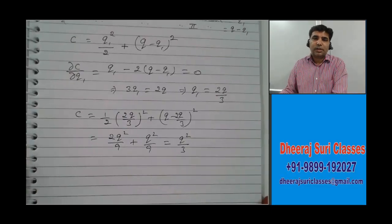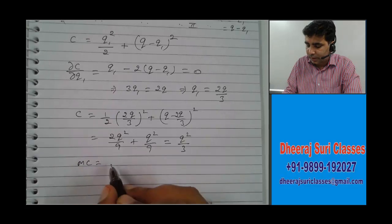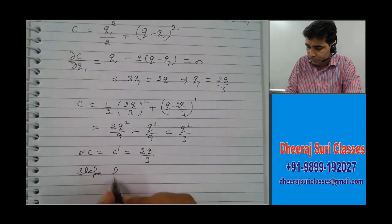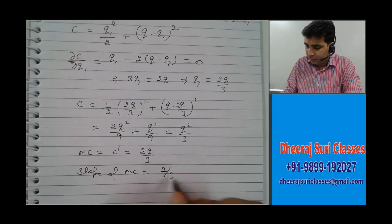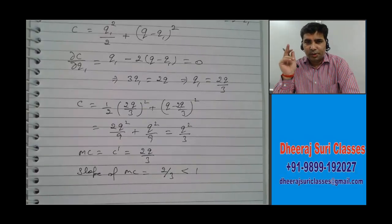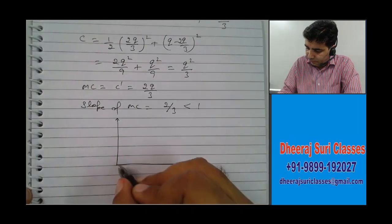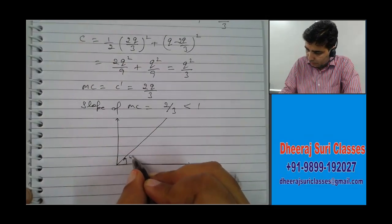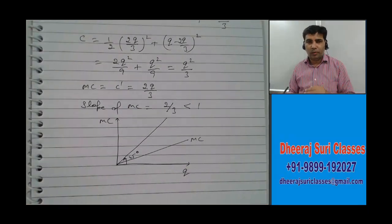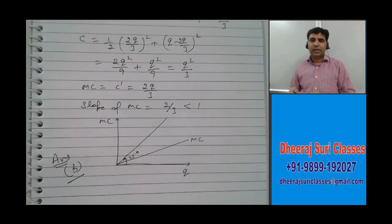The question asks about marginal cost. MC equals C dash, which is 2Q by 3. So what is the slope of MC? It is 2 by 3, which is less than 1. Since the 45-degree line has slope 1, and MC has slope 2 by 3, the MC curve lies below the 45-degree line. You can verify this on the graph — placing MC on the quantity axis, it clearly falls below the 45-degree line. So the correct answer is option B.